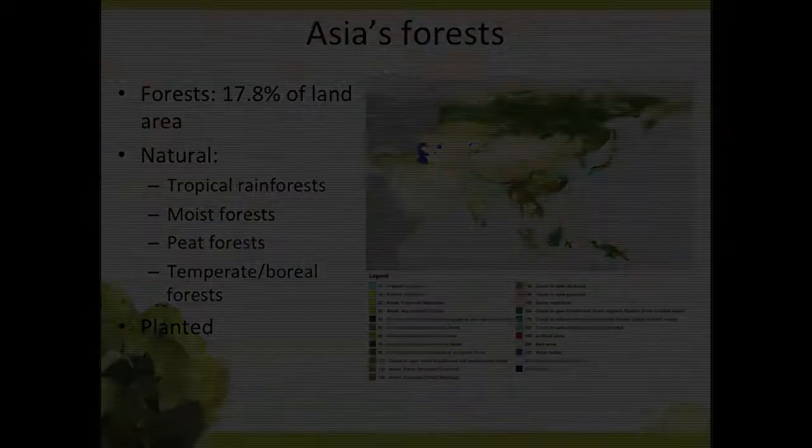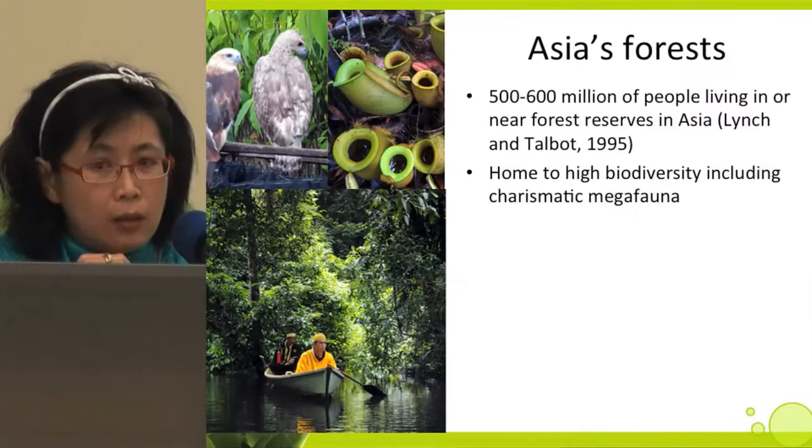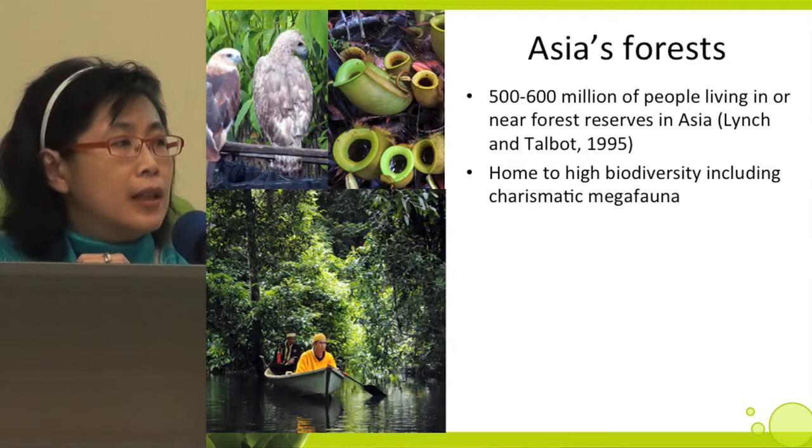Asia's forest comprising 17.8% of the land area in Asia. The natural forest consists of tropical rainforest, moist forest, peat forest, temperate or boreal forest. Besides the natural forest, there are some areas also planted, but this is under debate whether the planted ones can be categorized as forest or not. It is home for 500 to 600 million people living in or near the forest reserves in Asia, home to high biodiversity including the charismatic mega fauna.